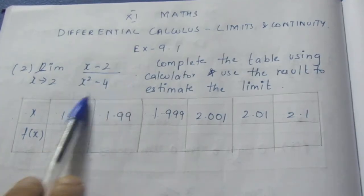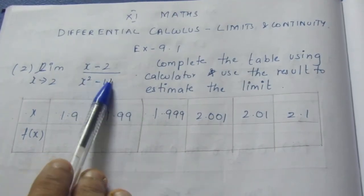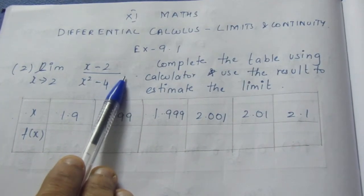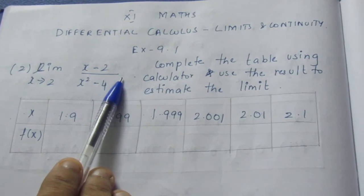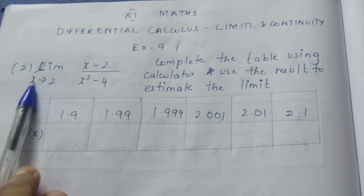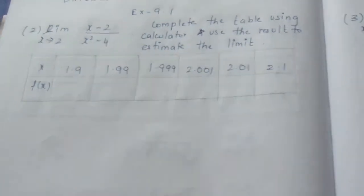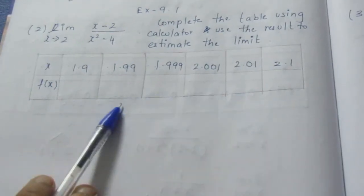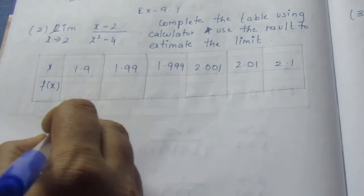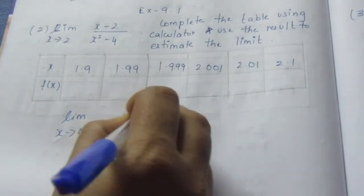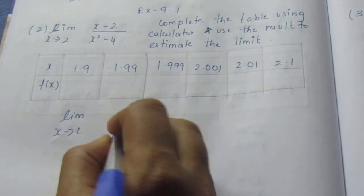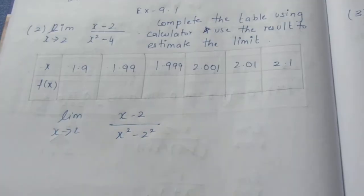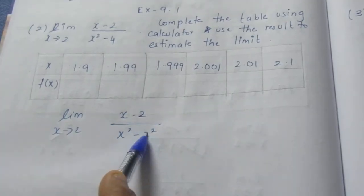We can substitute the limit from 1.9, 1.99, and so on. We can substitute x tends to 2, but we can substitute the values as well. Now, limit x tends to 2, x minus 2 by x squared minus 4. That is, x squared minus 2 squared. Now, there is a square minus b square formula.